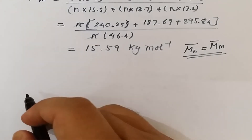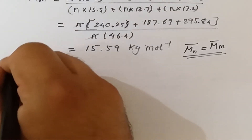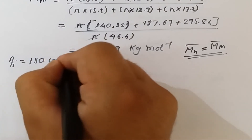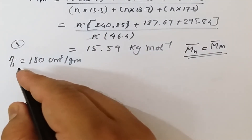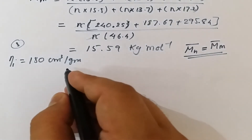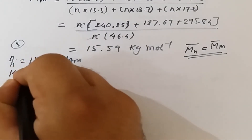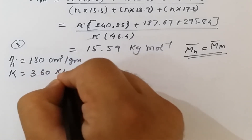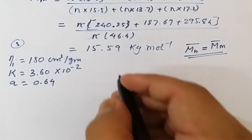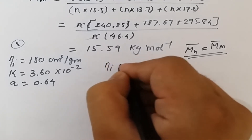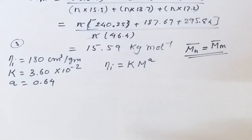The third numerical involves polyisobutene at 20°C. The intrinsic viscosity [η] = 180 cm³/g. The Mark-Houwink constants are given: k = 3.60 × 10⁻² and a = 0.64. All these values are given, and we know the relation [η] = k·M^a. With three known values, we can calculate the viscosity average molar mass.